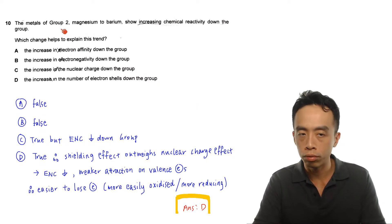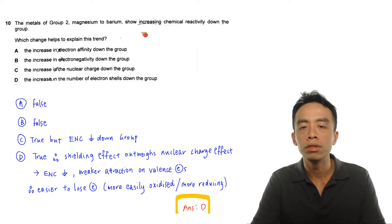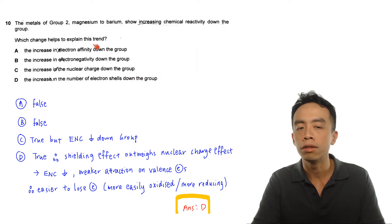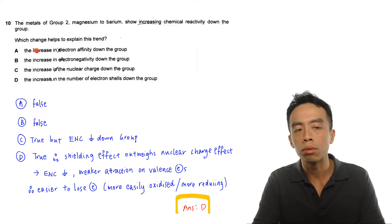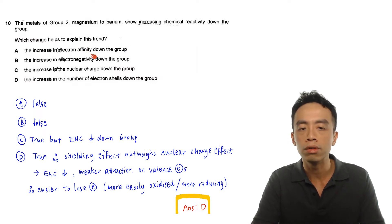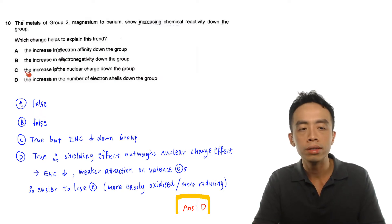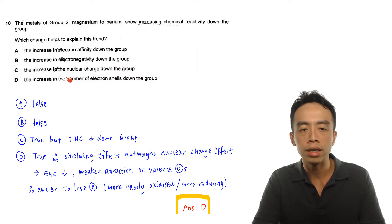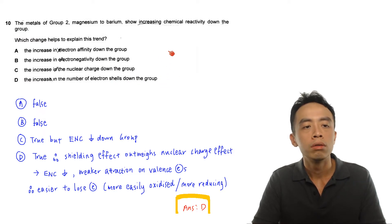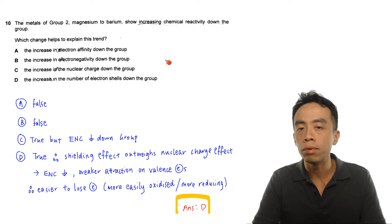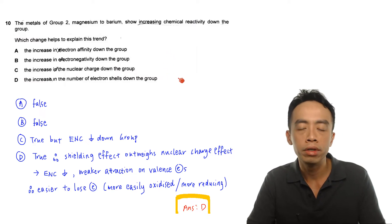The metals of Group 2, magnesium to barium, show increasing chemical reactivity down the group. Which change helps to explain this trend? This question is under group chemistry — Group 2 metal chemistry. Option A: the increase in electron affinity down the group. Option B: the increase in electronegativity down the group. Option C: the increase in nuclear charge down the group. Option D: the increase in the number of electron shells down the group.